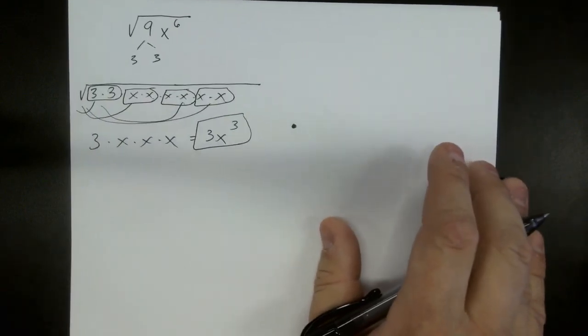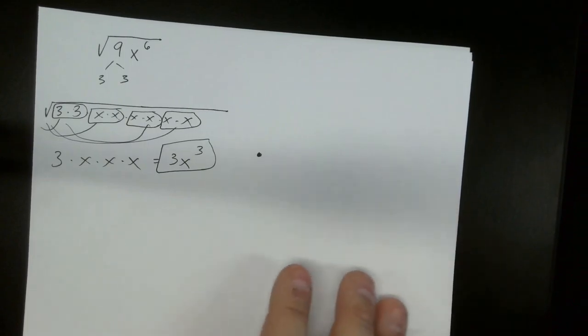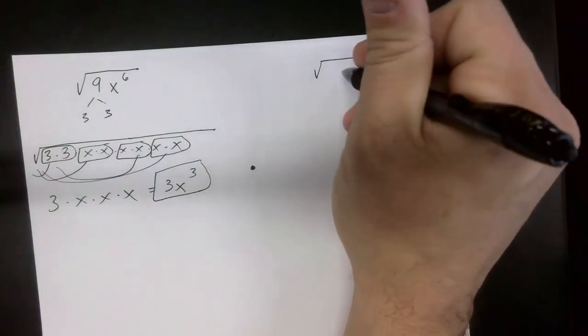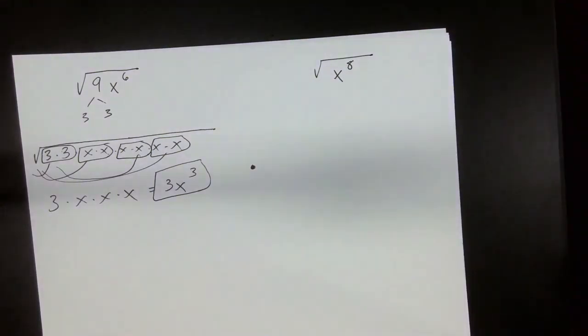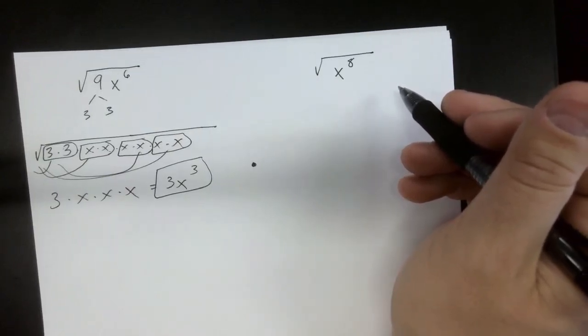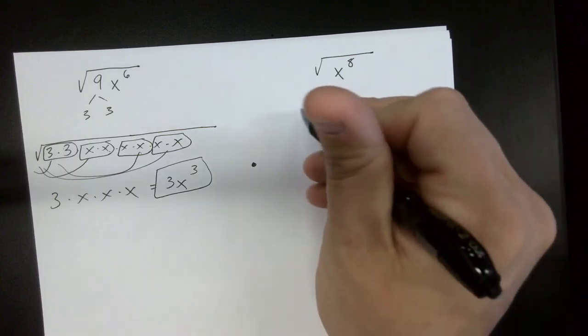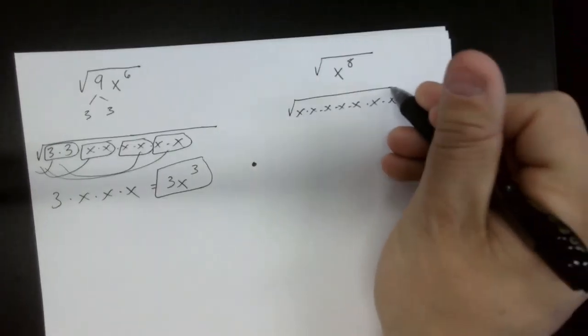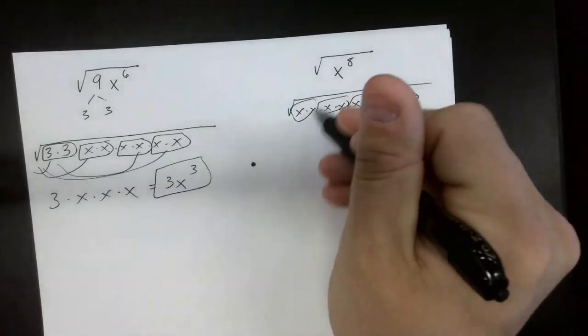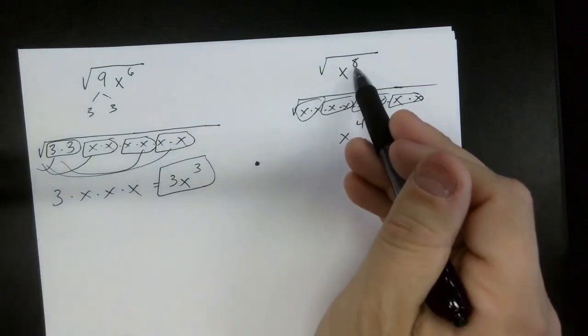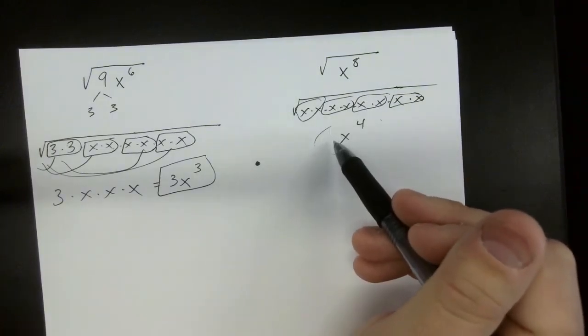If we happen to have the square root of x to the 8th, how many x's is this? 8, right? How many pairs is it? 4. Does that make sense to everyone? Now you can write it out where it has 8 x's and find all your pairs, and we know that x to the 8th is going to be brought down to x to the 4th as your solution. Or you can do it this way. There's two things in a pair, right? How many times does 2 go into 8? 4 times. There's your answer.